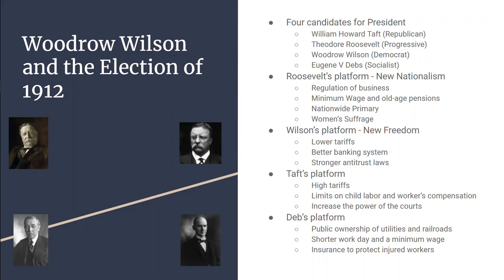William Howard Taft — the best way I can describe him is business as usual. By 1912, he was pro-business, high on tariffs. He wanted to increase the power of the courts, and he wanted to put limits on both child labor laws and workers' compensation.